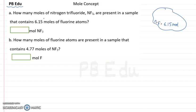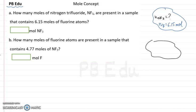The number of moles of fluorine atom is 6.15 moles and we have to find out how many moles of NF3 are in the sample. In part B, how many moles of fluorine atoms are present in a sample that contains 4.77 moles of NF3? In that sample, the number of moles of NF3 given are 4.77 moles and we have to find out the number of moles of fluorine atom.